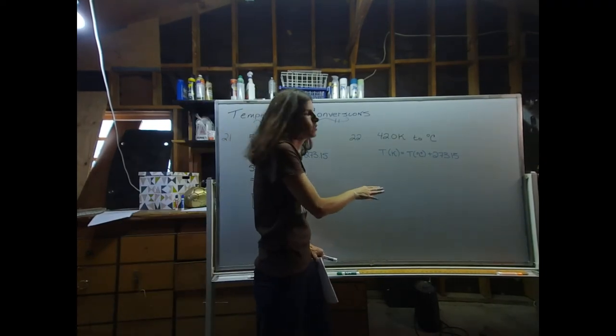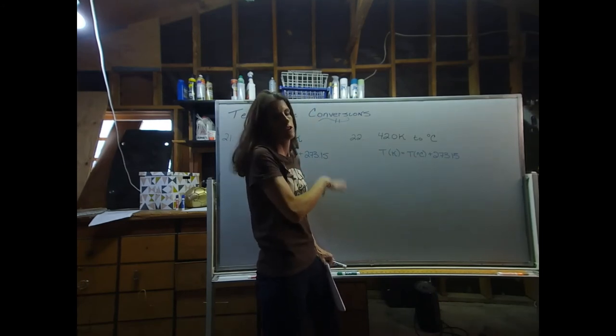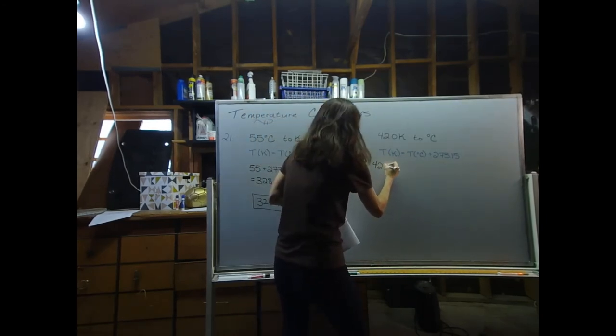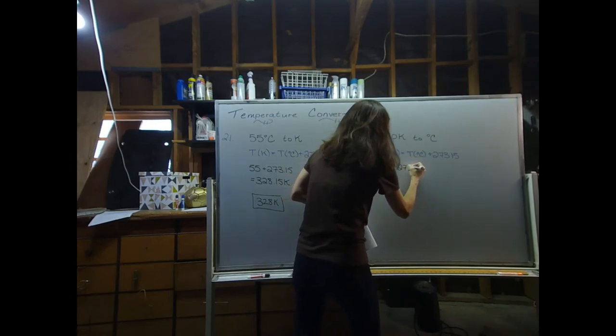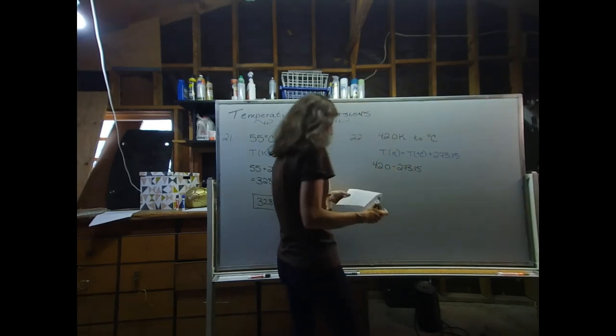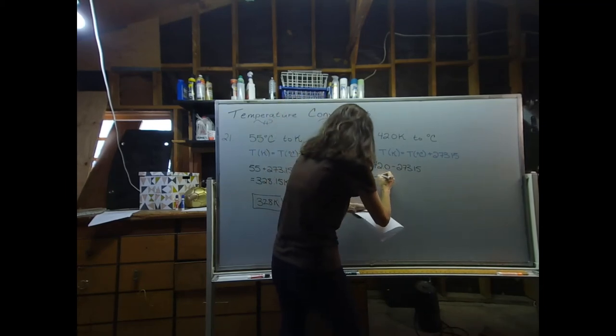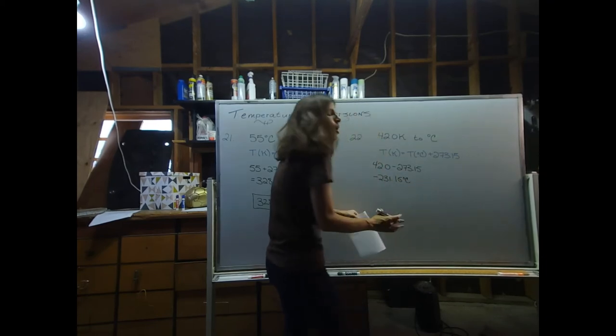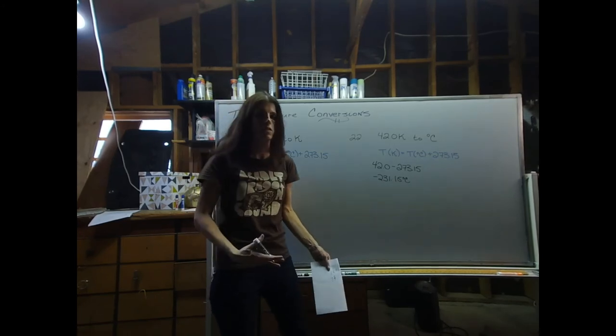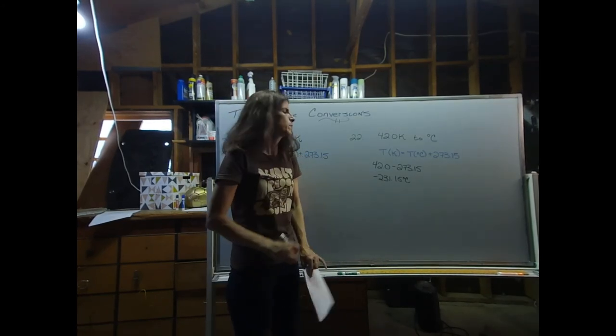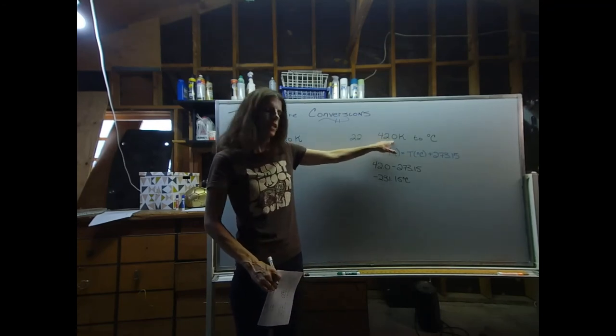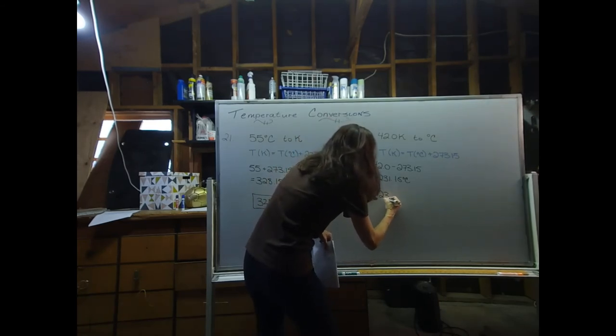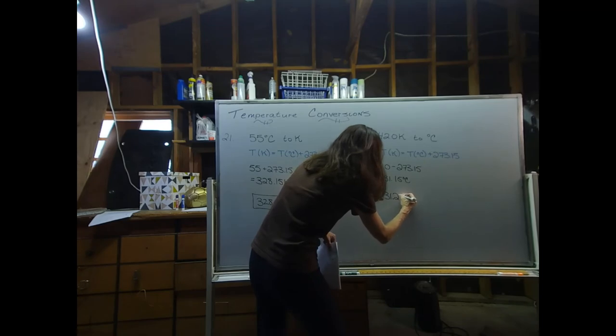So in number 22, since we're converting in the opposite direction from Kelvin to Celsius, we're going to have to subtract this time. So I'm going to do 42.0 minus 273.15. When I do that, I get a value of negative 231.15 degrees Celsius. Perfectly acceptable to have a negative number for the Celsius system. It's Kelvin where there's no negatives, right? This goes to the tenths place. So we're going to want to round this one to the tenths place. I'm going to report my final answer as negative 231.2 degrees Celsius.